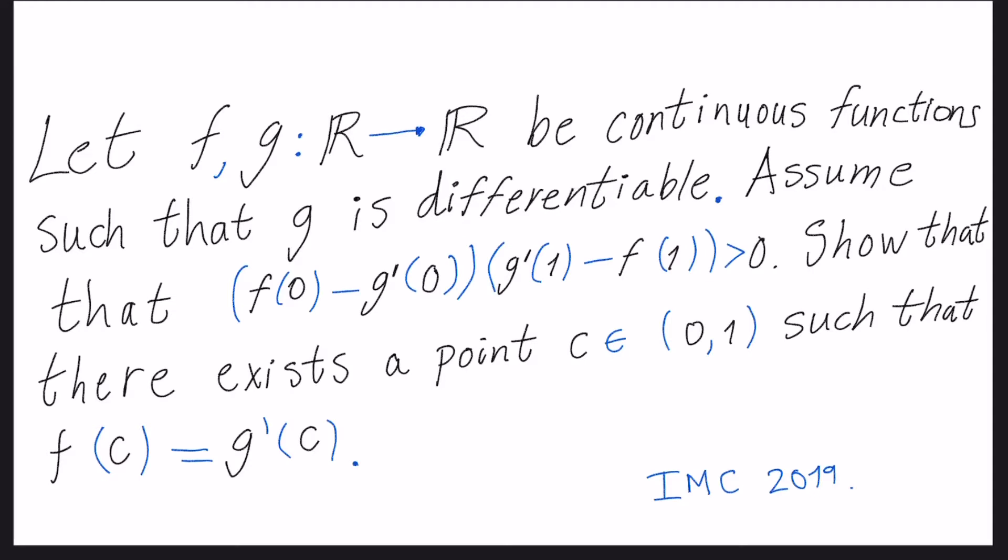The problem says the following: Let f and g be continuous functions from reals to reals such that g is differentiable. Assume that (f(0) - g'(0))(g'(1) - f(1)) > 0. Show that there exists a point c that belongs to the interval (0,1) such that f(c) is equal to g'(c).